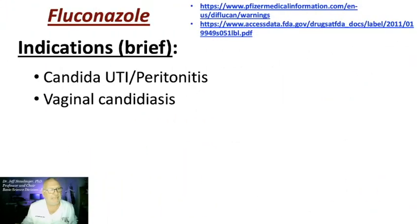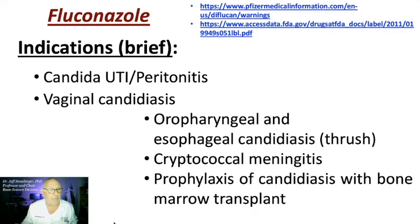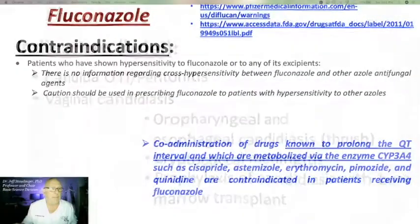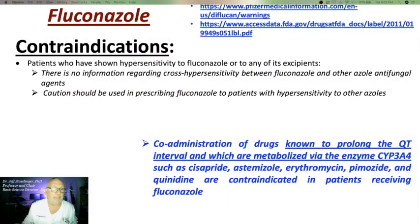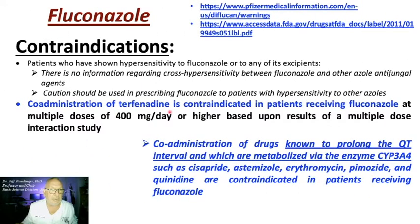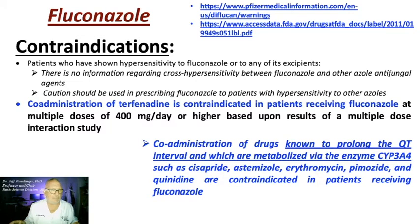Fluconazole is indicated for Candida urinary tract infections, peritonitis, vaginal candidiasis, oropharyngeal candidiasis, cryptococcal meningitis, and prophylaxis of candidiasis in bone marrow transplant patients. It is contraindicated in patients with hypersensitivity to fluconazole or any of its excipients — which are everything in the oral pill besides the active drug. Co-administration of terfenadine is contraindicated in patients receiving fluconazole, as this drug-drug interaction is the prototype of long QT syndrome and torsades de pointes.